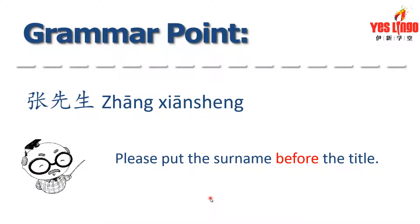Now, how do we use the titles with the surnames? It's a bit different in Chinese. In English, the order is title plus surname, like Mr. Zhang. Well, in Chinese, it goes surname plus title. So Mr. Zhang becomes 张先生. Just remember in Chinese, the surname always goes first, followed by the title.